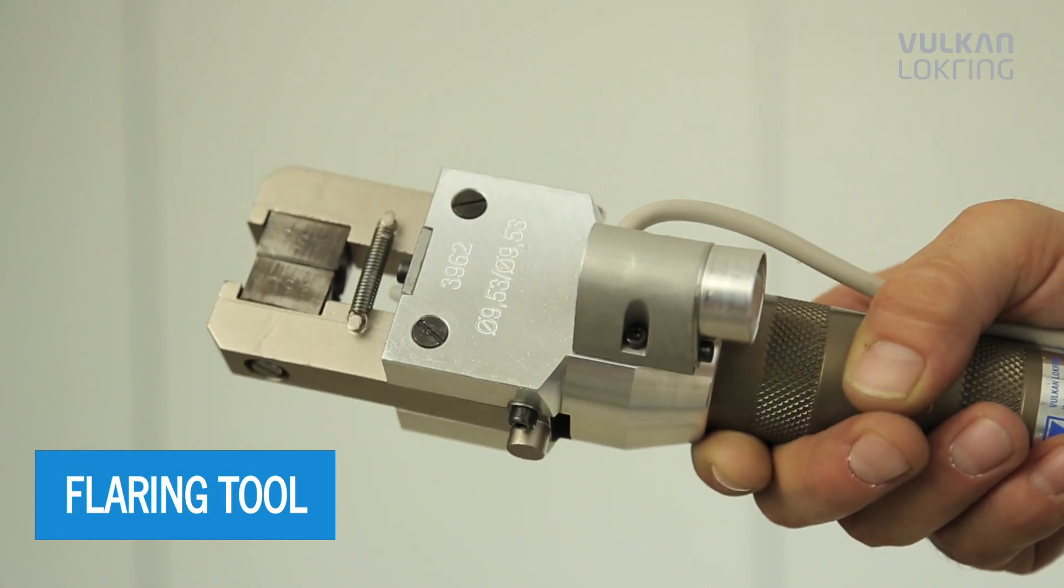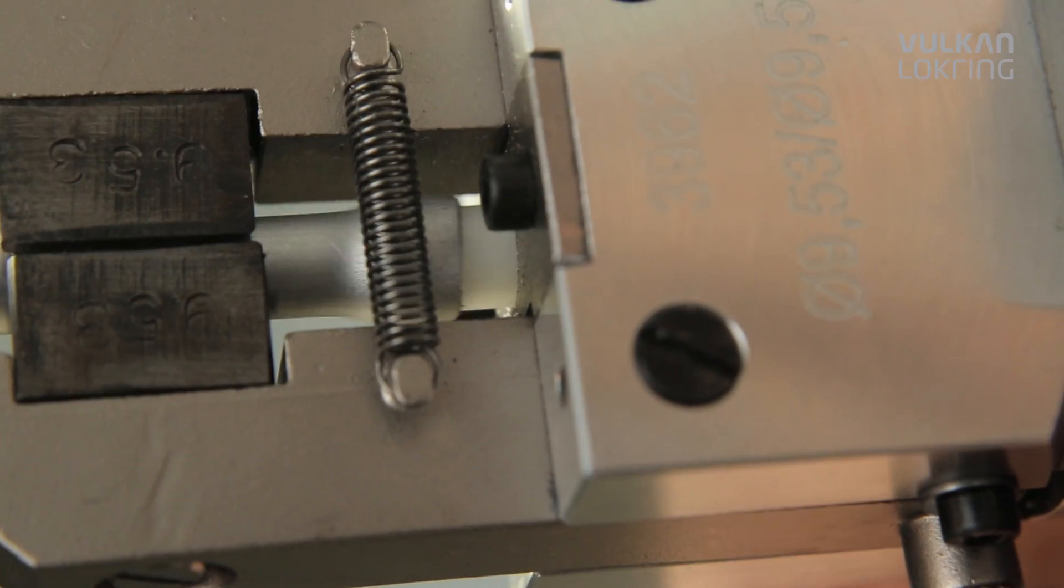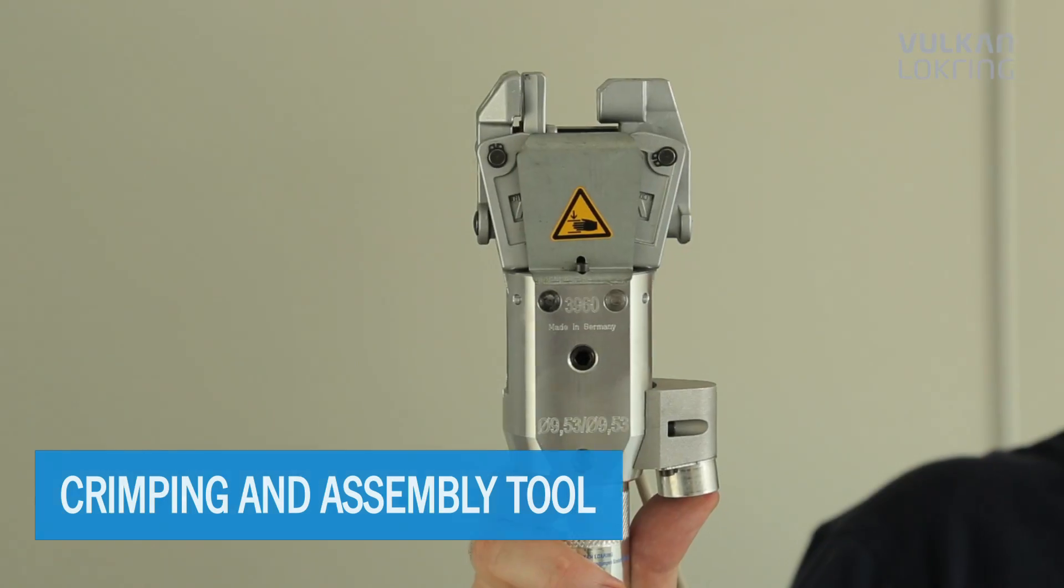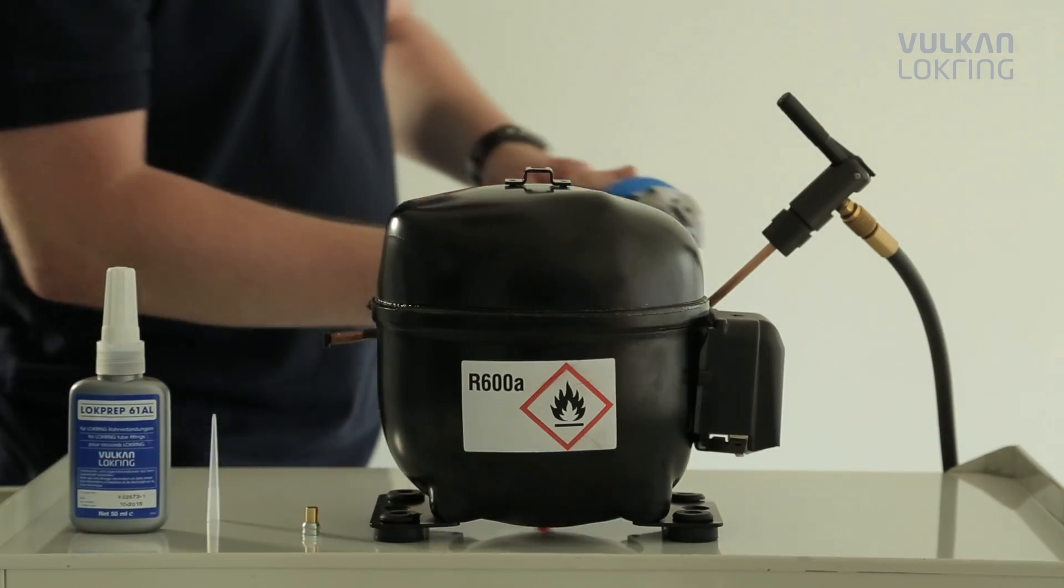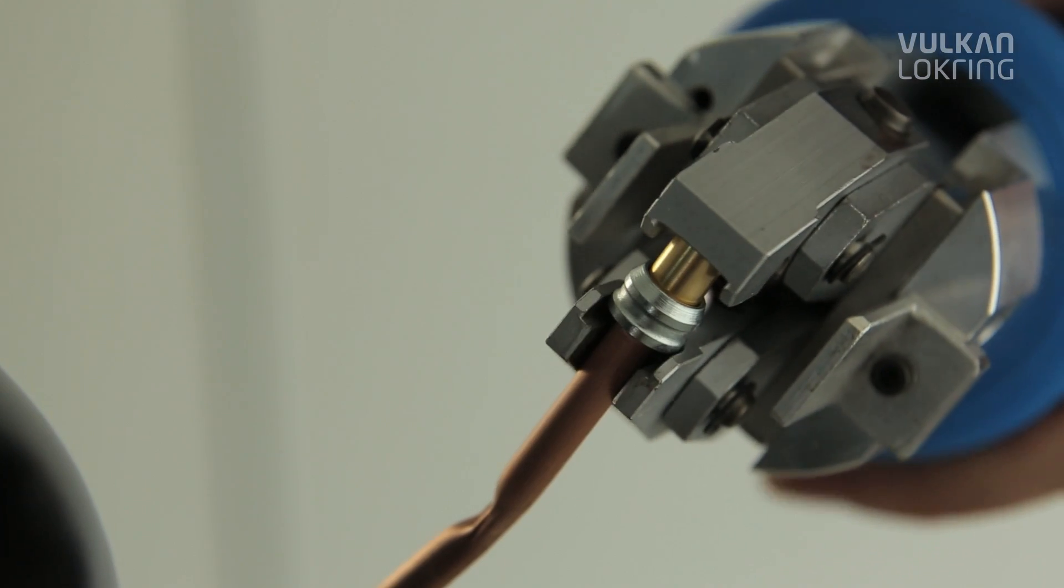Besides the hydraulic assembly tool, Vulcan Lockring also offers a hydraulic flaring tool for flaring of aluminium tubes. Furthermore, the pneumatic crimping and assembly tool is available for sealing of the tube ends after charging the system with refrigerant.